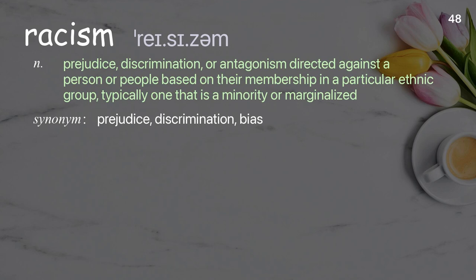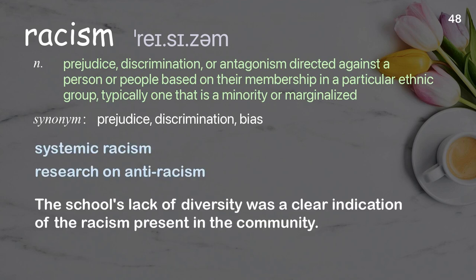Racism. Prejudice, discrimination, or antagonism directed against a person or people based on their membership in a particular ethnic group, typically one that is a minority or marginalized. Examples: systemic racism, research on anti-racism. The school's lack of diversity was a clear indication of the racism present in the community.